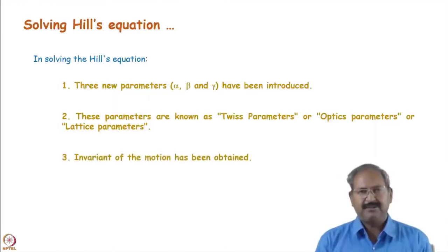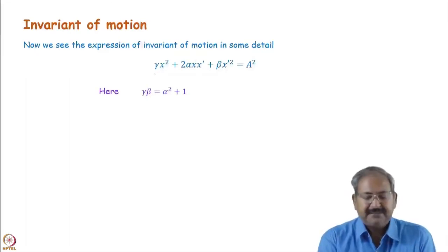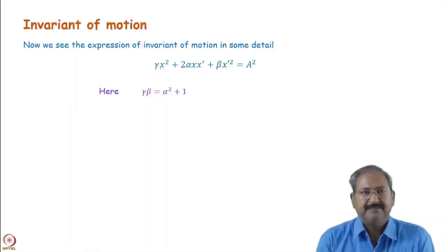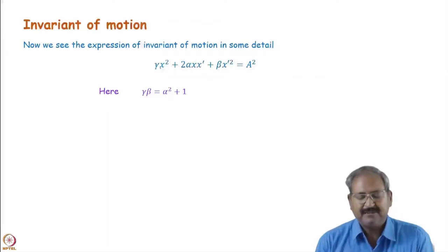We now see the expression of this invariant of motion in some detail. This equation is in x and x-prime, meaning there are two coordinates: x, which shows the displacement, and x-prime, which shows the angle. So these are two variables, making this a second-order algebraic equation in two variables.